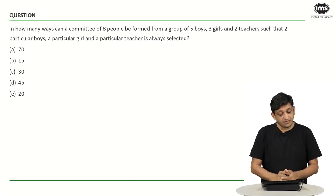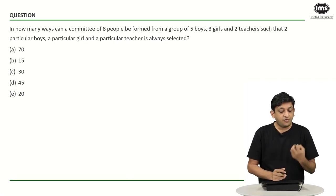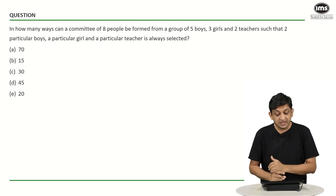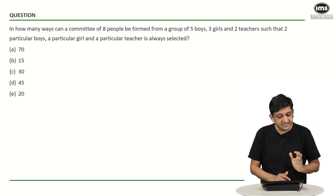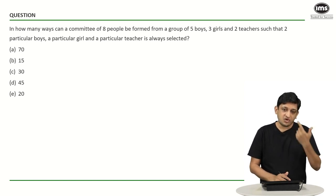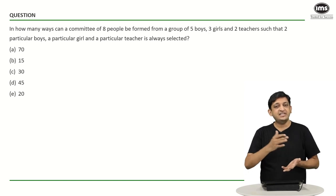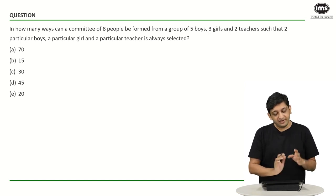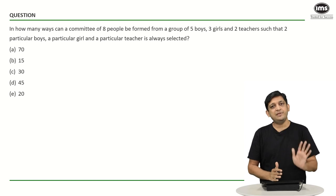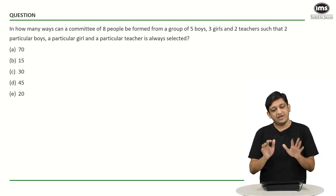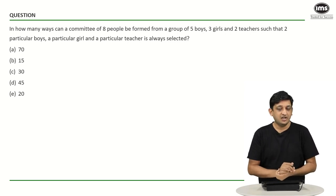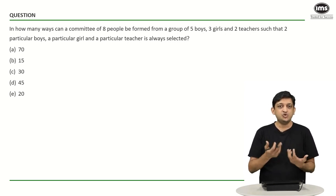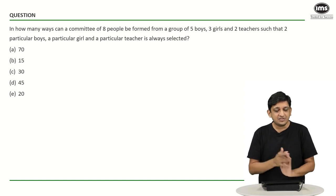Now this is a rather straightforward question. What we have to do is form a committee of eight people from a group of five boys, three girls and two teachers, such that two particular boys are already selected, a particular girl is already selected and a particular teacher is already selected. So we have already reserved places for four people. These four people were present in the original group but have already confirmed their entry into this committee. So whoever remains, we have to choose people from the remaining people.